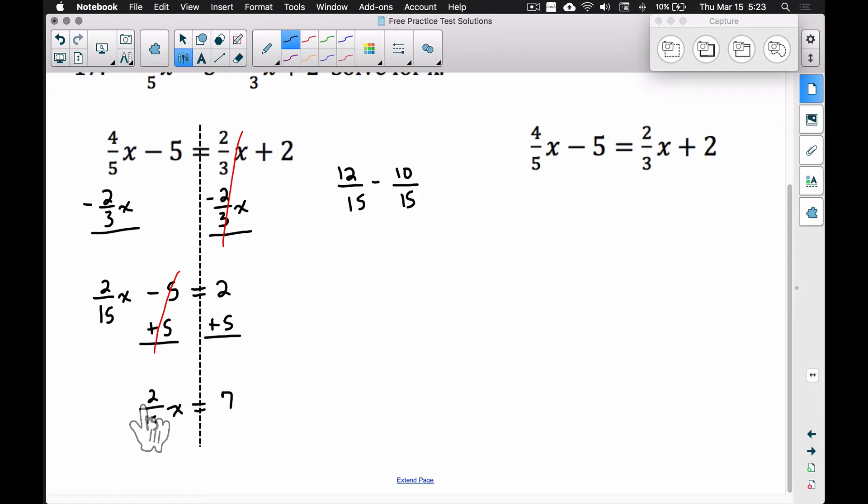Now we have 2/15 X equals 7. Our last step here is to divide by 2/15, so we are going to divide by this fraction because this fraction is getting multiplied by X, and the inverse operation of multiplication is division. On the left hand side, 2/15 divided by 2/15 equals 1, because a number divided by itself is always 1.